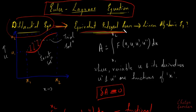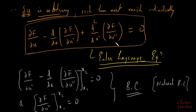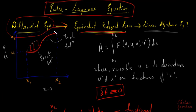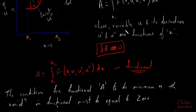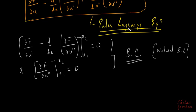To summarize this whole lecture: in the variational method, the differential equation is first converted to an equivalent integral form, and then to a linear algebraic equation. The Euler-Lagrange equation we derived helps convert the governing differential equation into its equivalent integral form. We will take one example in our next lecture to see exactly how it does that.